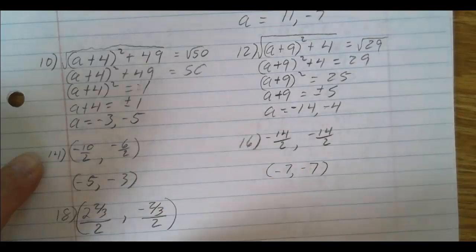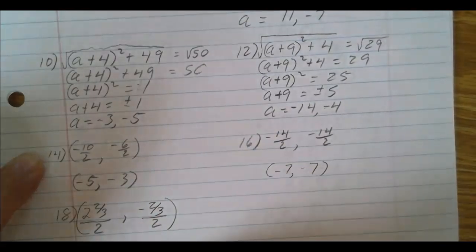18, when you divide that out, you get 1 and 1 third and you get a negative 1 third.